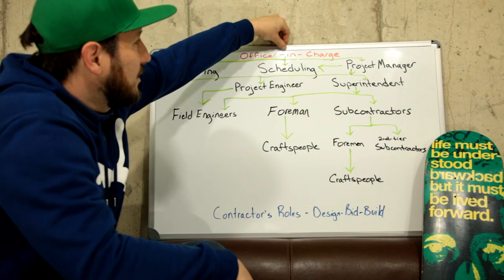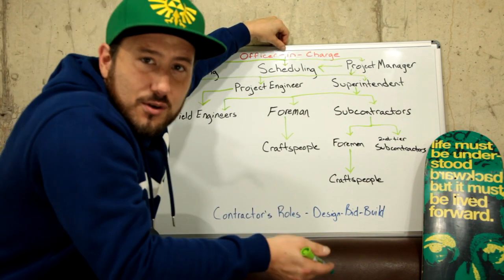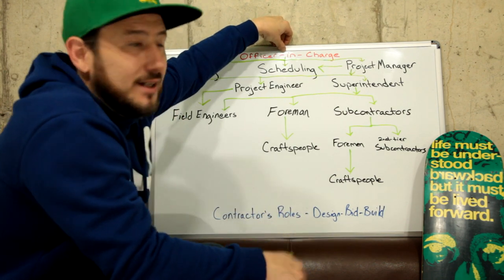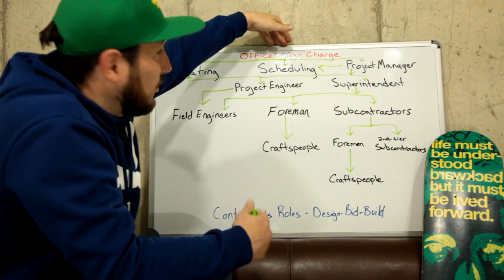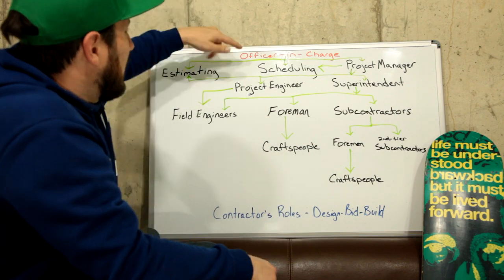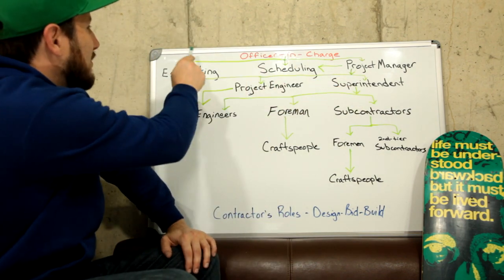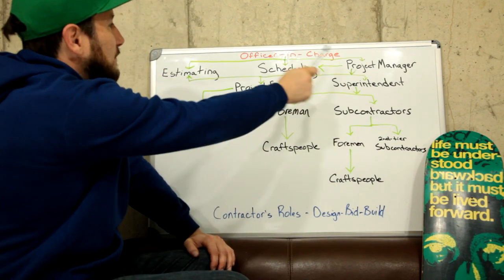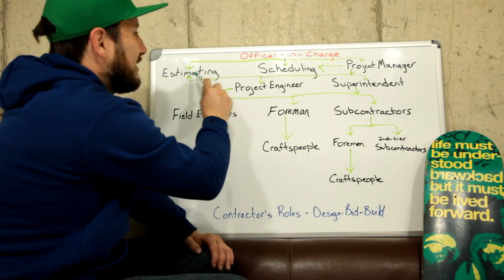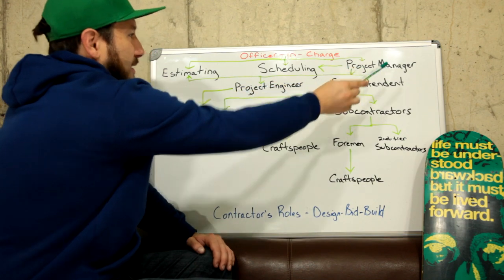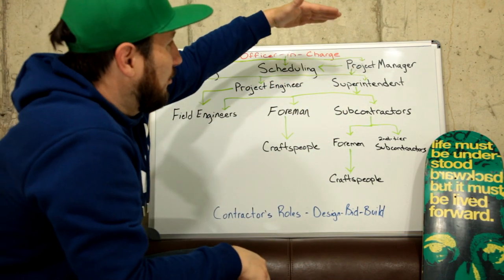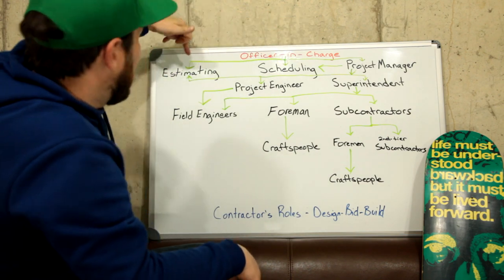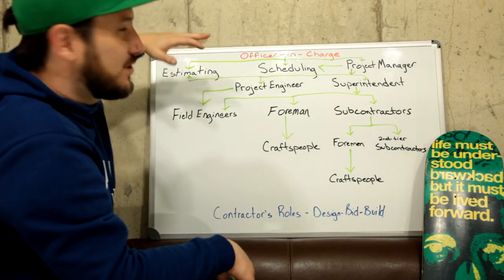The officer in charge is going to be the company owner, the CEO, president — whatever. This person is the head honcho. They're directly related — the green arrows pointing are direct relationships. The officer in charge obviously works closely with estimating, scheduling, and the project manager. Project managers in smaller companies will do the scheduling and the estimating, just to keep that in mind.